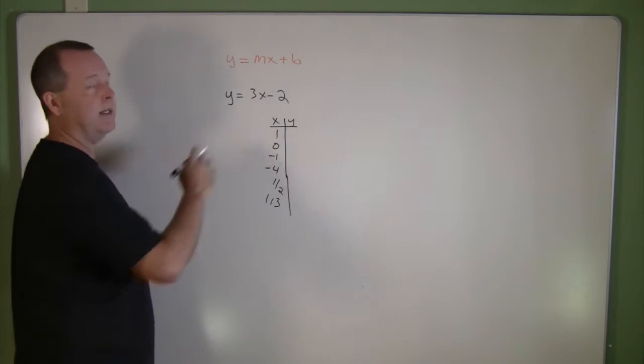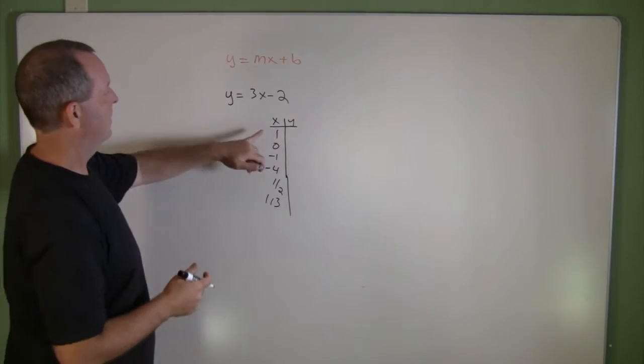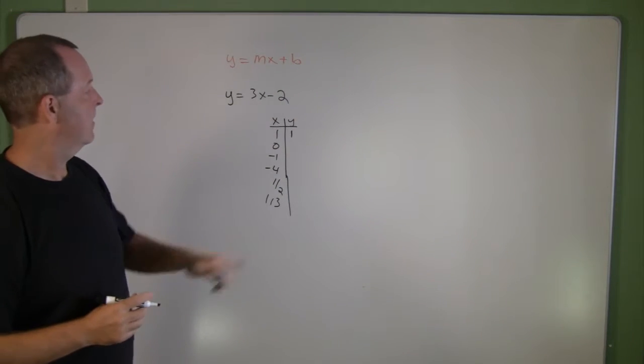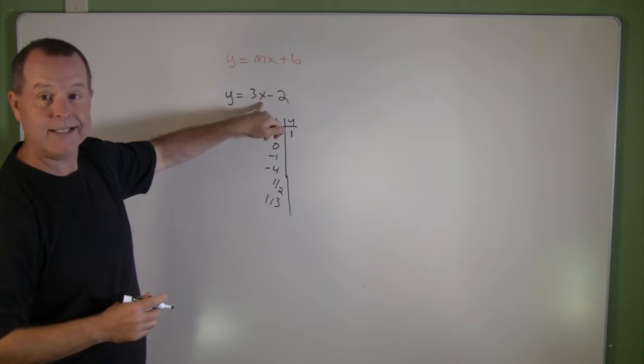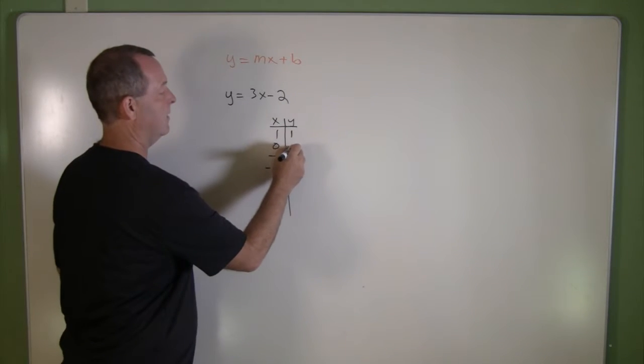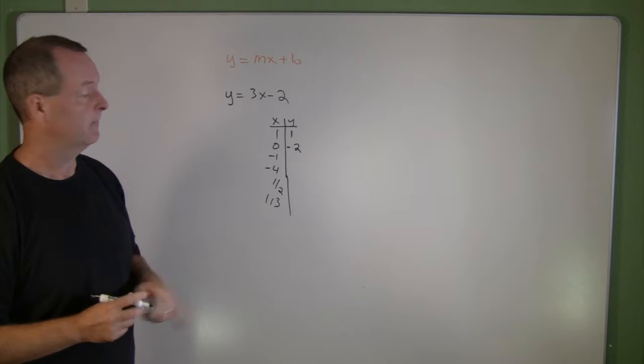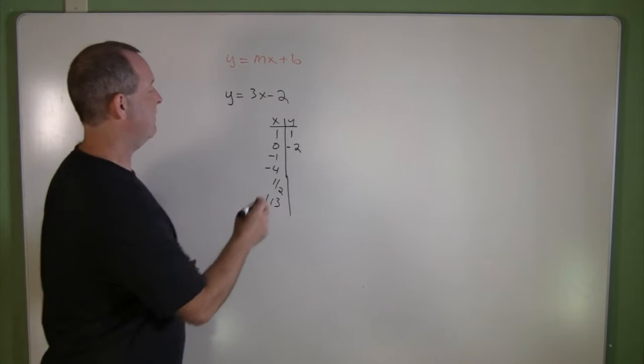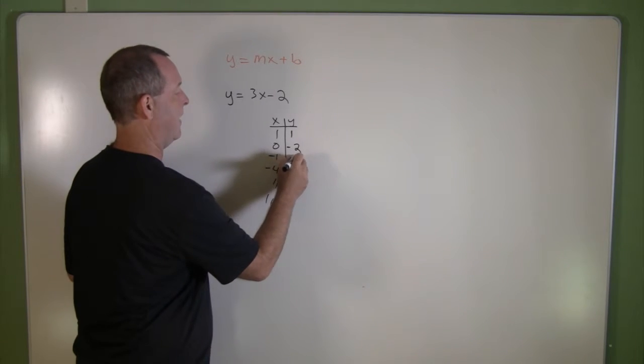So let's go with easy ones. 1, 3 times 1 minus 2 produces a 1. 0, 3 times 0 is 0, 0 take away 2 is negative 2. Negative 1, 3 times negative 1 is negative 3, negative 3 take away 2 is negative 5. I have three points.